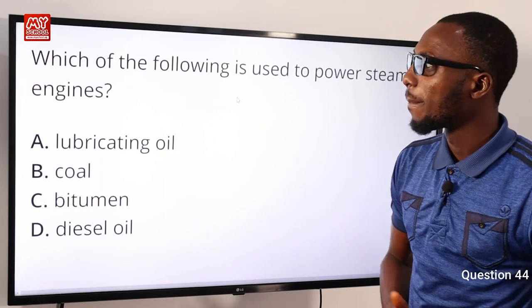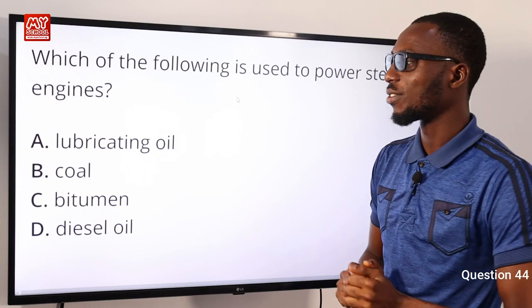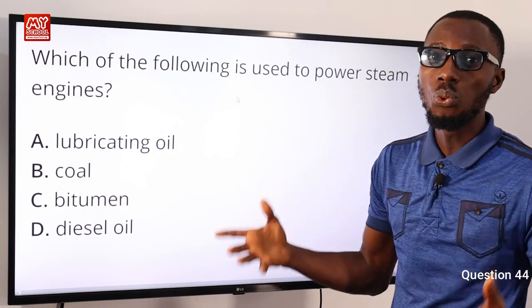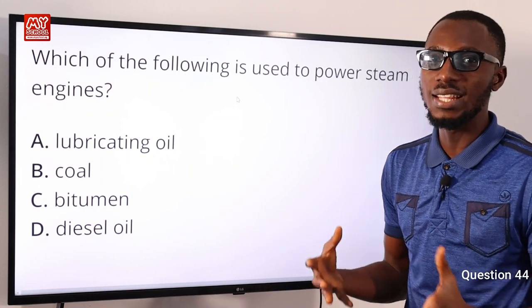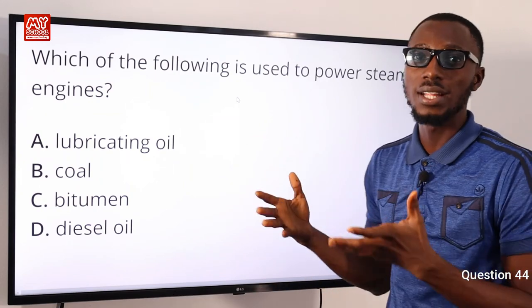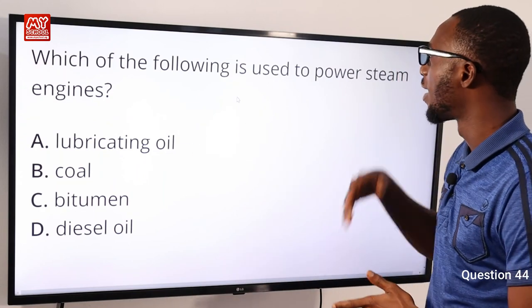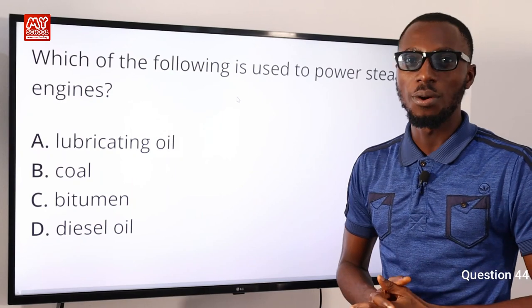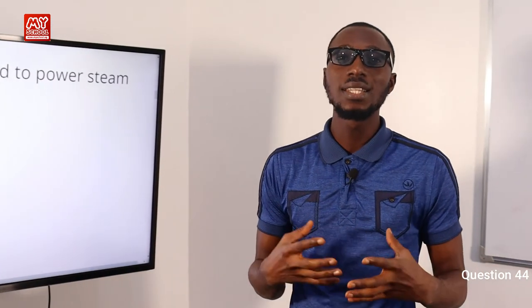Question 44. Which of the following is used to power steam engines? Steam engines are powered by coal, wood, or oil. Once burned, they produce heat which converts water to steam. Option B is correct. We've come to the end of this segment, but there are still more clips to be released.